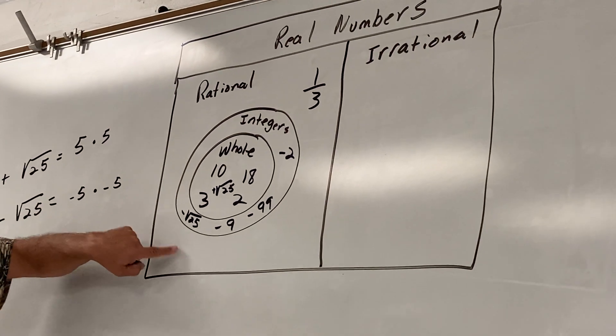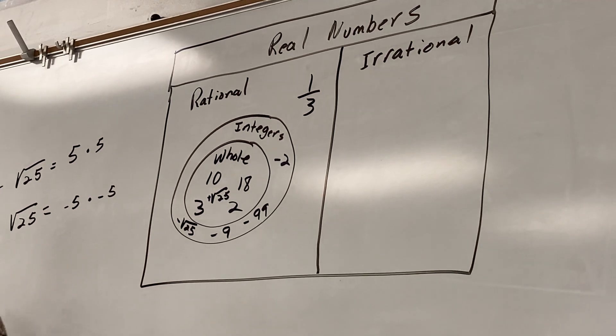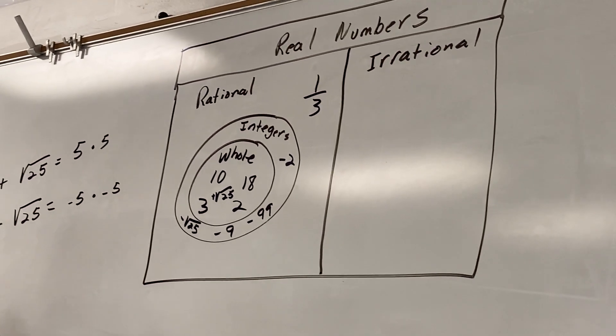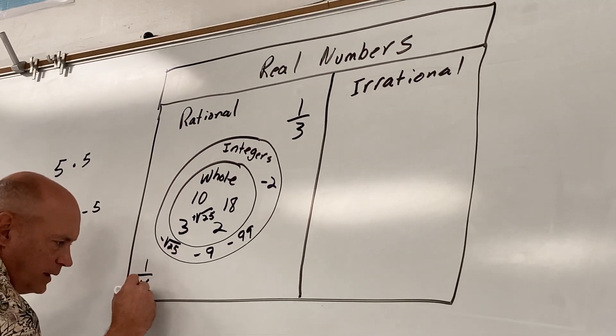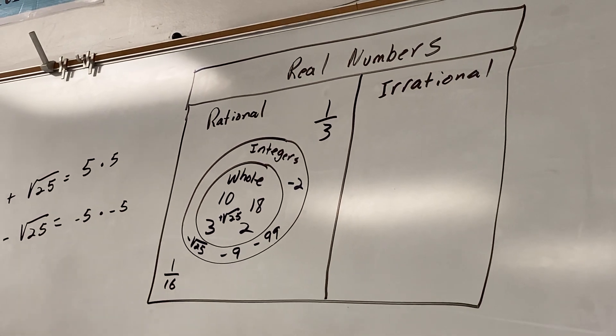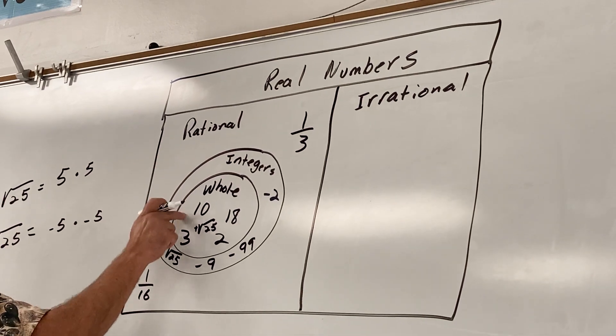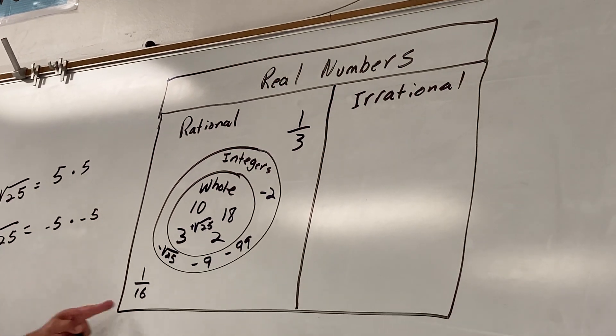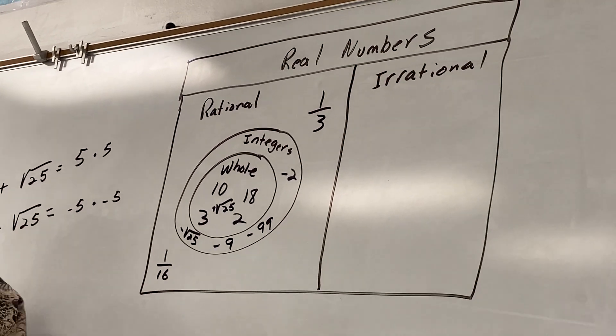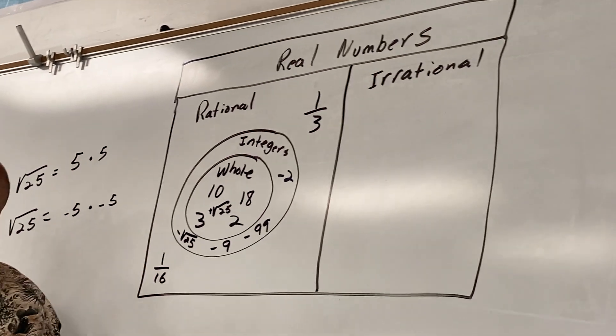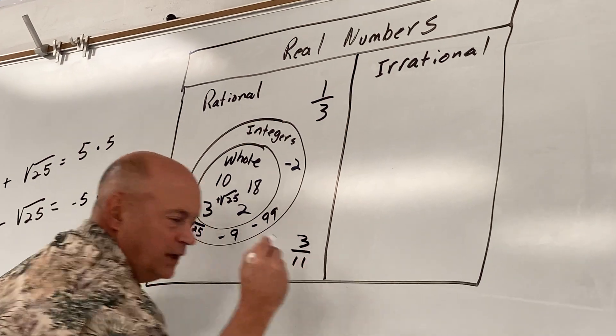Give me a few more that belong out here in just the rational number that are not integers or whole numbers. Ethan. One over 16. Give me another one. Jonathan. Three over 11. That'll work. Give me another one.